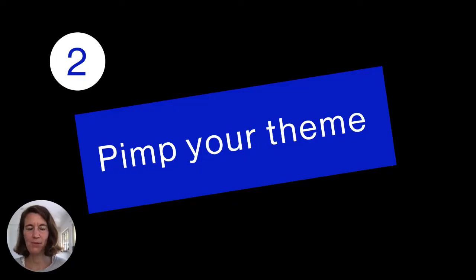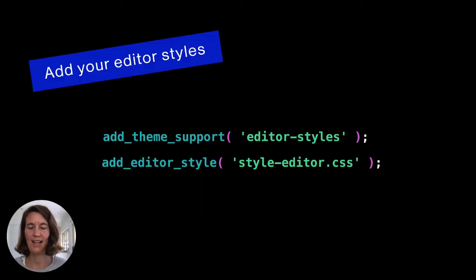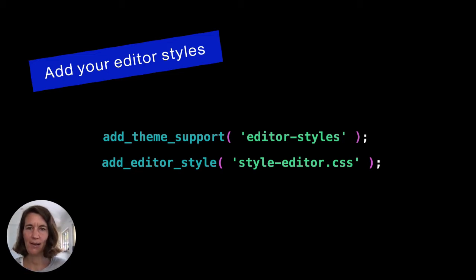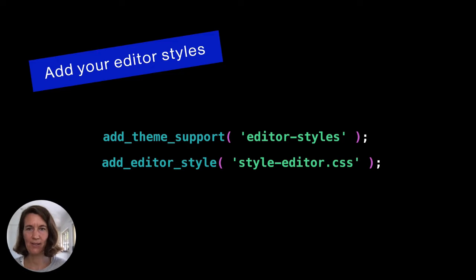A few snippets from the theme support page on how to get started. Just look at the theme support page on a regular basis because it gets updated. The first thing you want to do is add theme support for editor styles — that's just one line of code: add_theme_support('editor-styles'). If you want to add your own CSS, you can enqueue add_editor_style and include your own CSS file. These two lines are very important for the beginning.